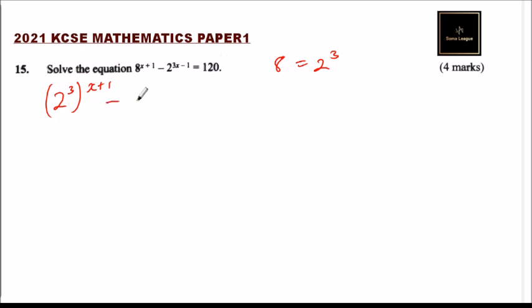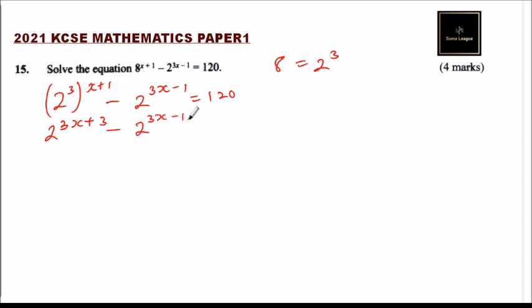So we have 2^(3(x+1)) - 2^(3x-1) = 120. Opening the bracket, we get 2^(3x+3) - 2^(3x-1) = 120.